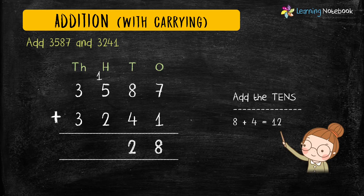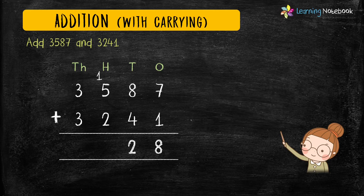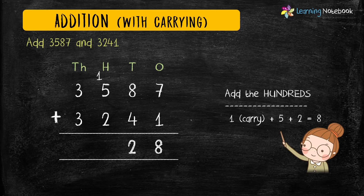Again, let's understand why we did this — because 12 means 1 hundred and 2 tens, that is why we carry 1 to the hundreds place. In simple words, if you get a two digit number after addition then you have to carry, as shown here.